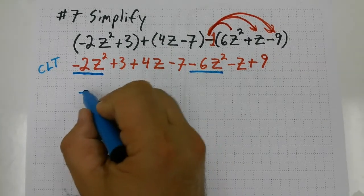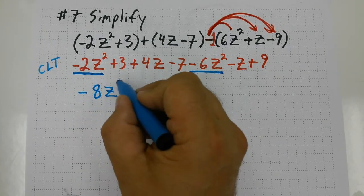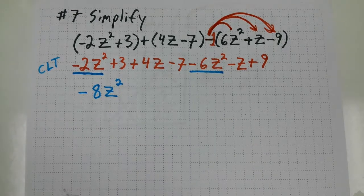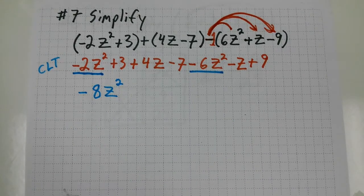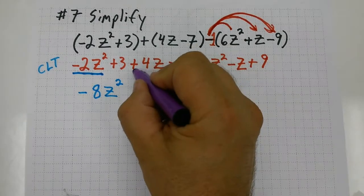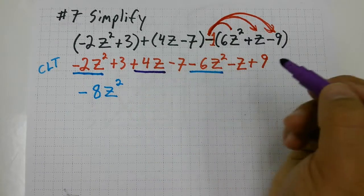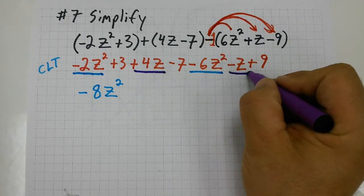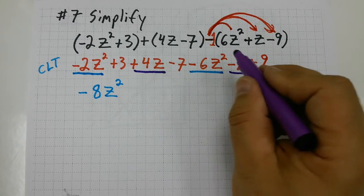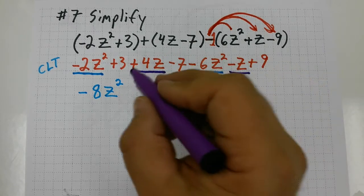Now I need to see if there's anything like 4z. Well, let me see what's like 4z—well, minus z. So 4z minus 1z, that's going to give me plus 3z.